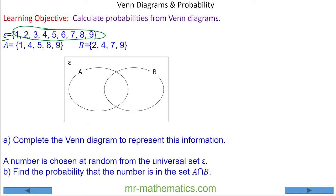Epsilon means this is our universal set. These are the outcomes that fall in oval A — this is set A — and these are the outcomes that fall in set B. Complete the Venn diagram to represent this information. We begin by identifying the intersecting values in A and B, which are 4 and 9. Then 1, 5, and 8 fall in set A but not set B. 2 and 7 fall in set B but not set A. And 3 and 6 fall outside of our union.